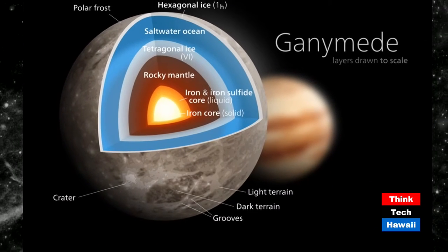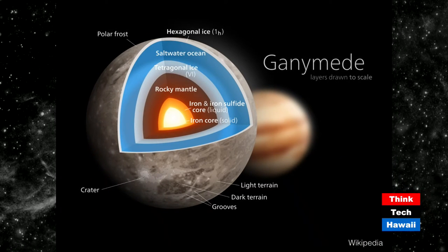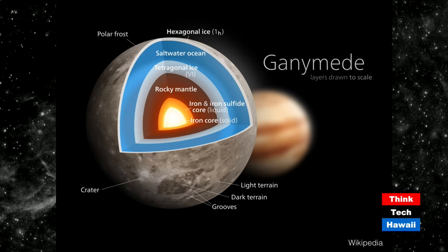This is a picture of Ganymede showing its onion-like structure. It has hexagonal ice on the surface — the same kind of ice you find in your freezer or as snow. People believe there's a sub-surface ocean beneath that. If you go deeper, you find tetragonal ice, ice VI. Even deeper, there's a rocky mantle and an iron core. Ice VI is a denser form of ice — it actually sinks in water rather than floating.